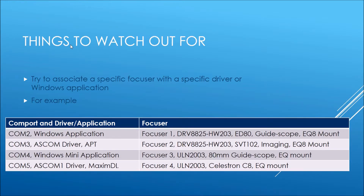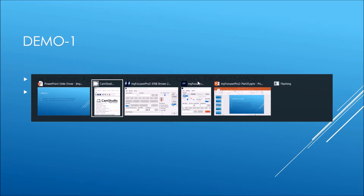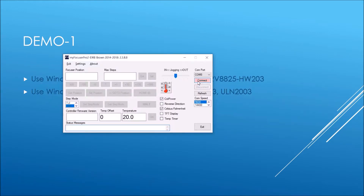In this demo we're going to use a Windows application to control the first focuser, which is on an imaging camera, and the second focuser is on a guide scope, which we'll control using the Windows mini application. The guide scope is on COM 3 and the imaging camera is on COM 5. Let's have a look at the imaging camera first.